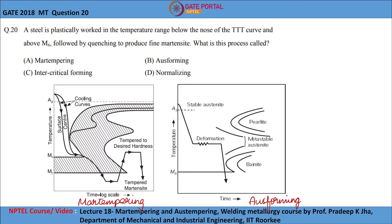In the case of intercritical forming, the samples are heated to the temperature between A1 and A3, and are then subjected to forming simultaneously on cooling. As a result of intercritical forming, the resultant heat-treated steel will have a dual phase microstructure, so it will not have a complete martensite microstructure.